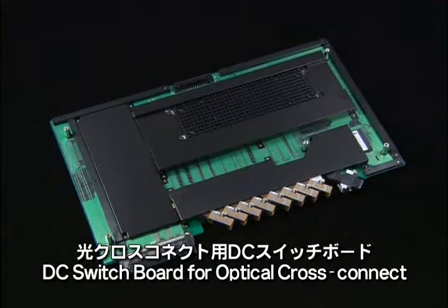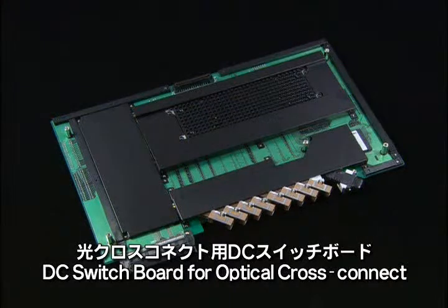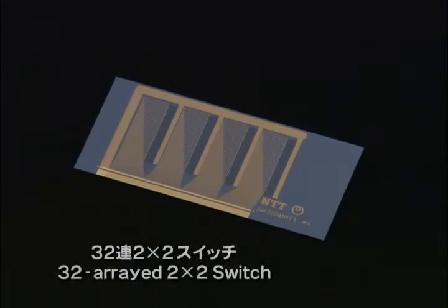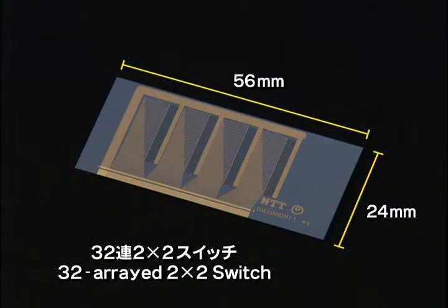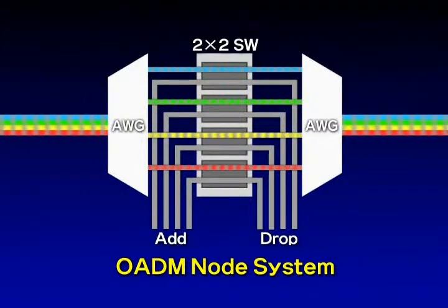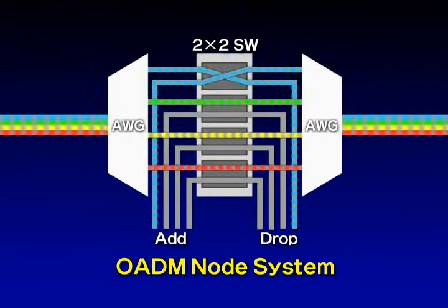The optical switch offers a compact optical cross-connect system. It can switch the destination of optical signals without converting them into electric signals. This is a 32 arrayed 2x2 switch — 32 sets of 2x2 optical switch circuits are integrated on one chip. Combining this switch and the AWG filters, we can build an OADM node system that can access any channel of the wavelength division multiplexing optical signals.